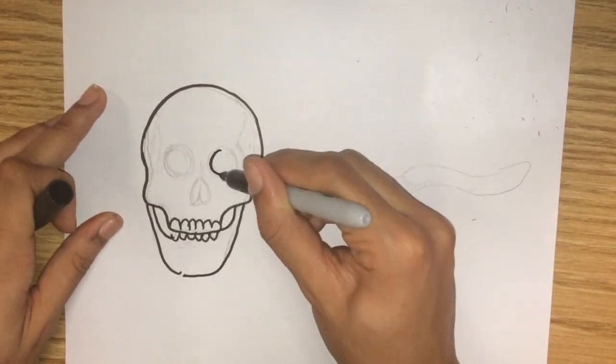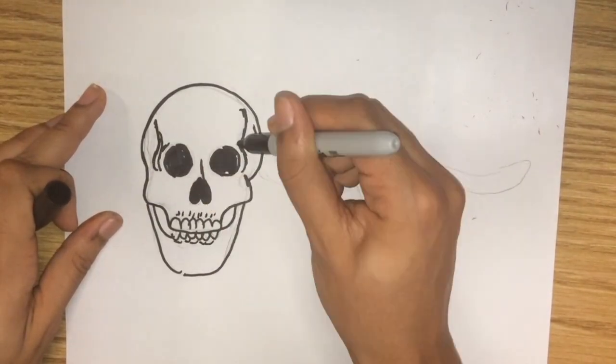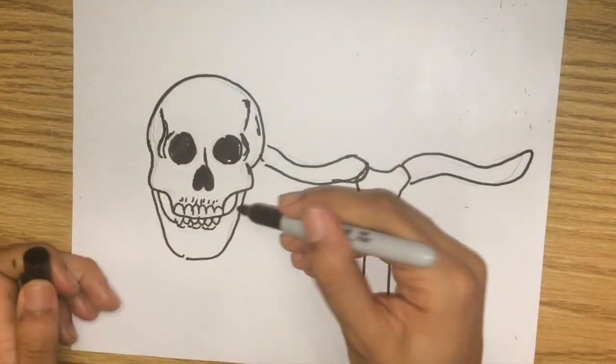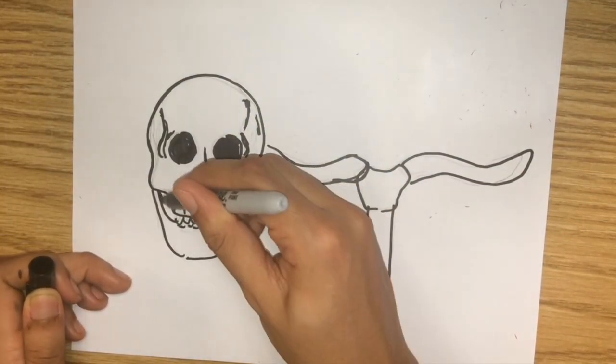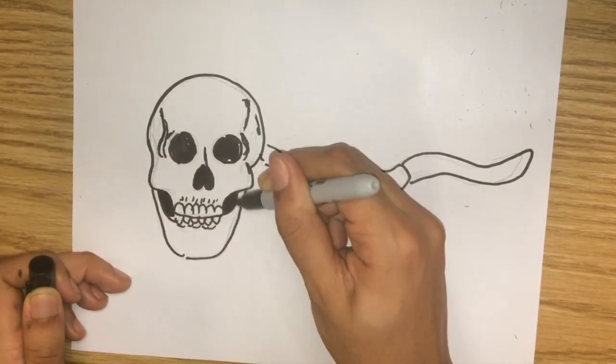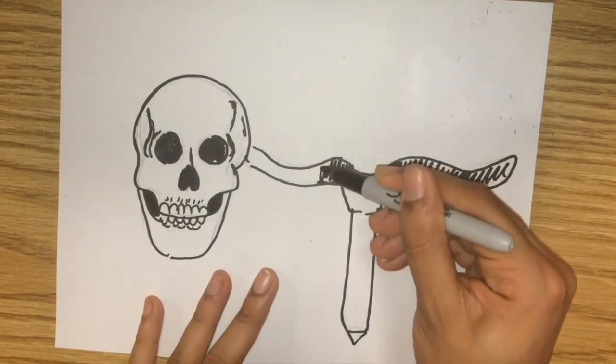This process will occur in utero at eight weeks after fertilization. It will create the flat bones in your skull in addition to the clavicle, which is also known as your collarbone.